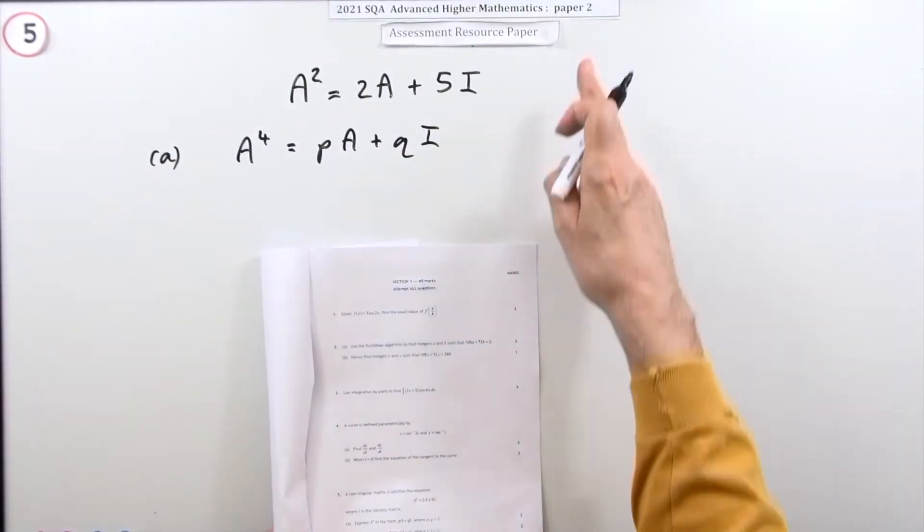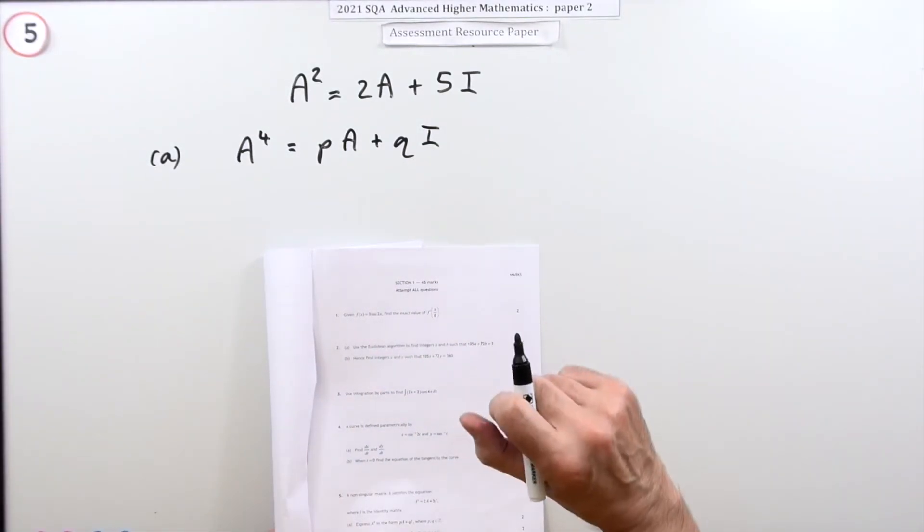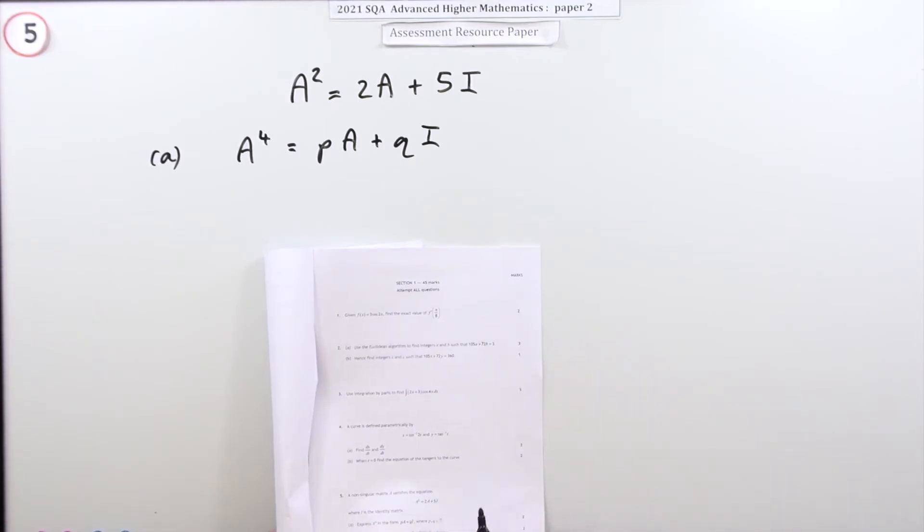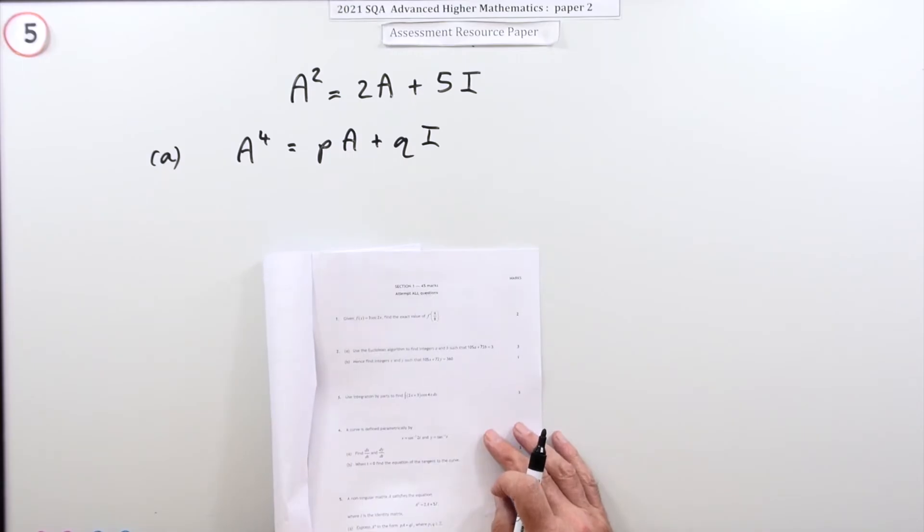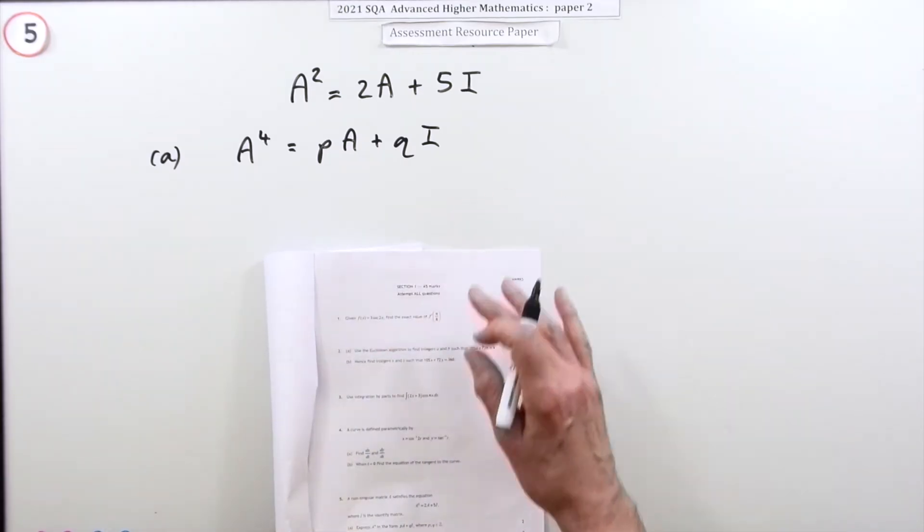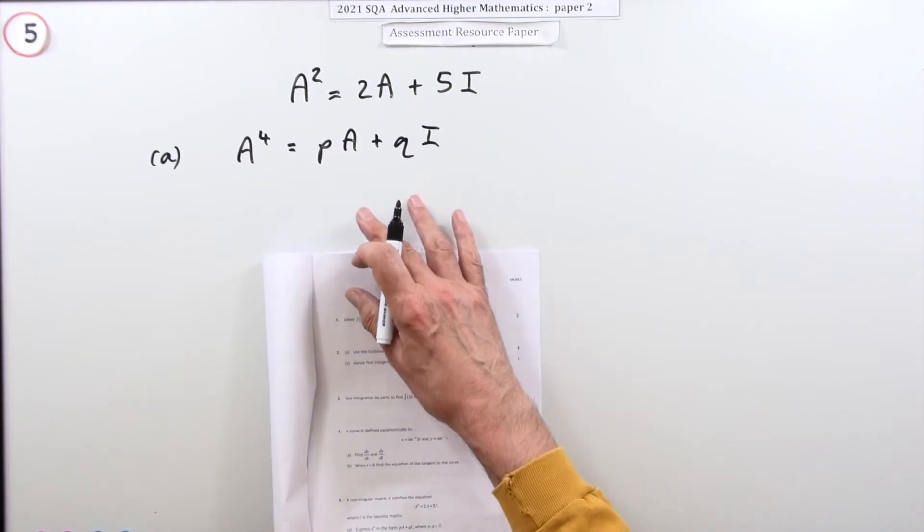So number five from paper two, the 2021 Advanced Higher resource paper, four mark question. It's matrices, but it's just algebraic manipulation of the matrices. The entries don't matter, so you just have to watch out for things like multiplying by I, the identity, which just leaves something the same.